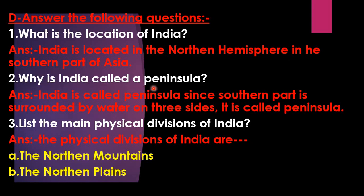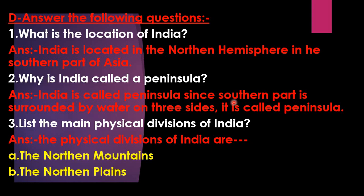Second question — Why is India called a peninsula? Answer: India is called a peninsula since its southern part is surrounded by water on three sides, so it is called a peninsula.